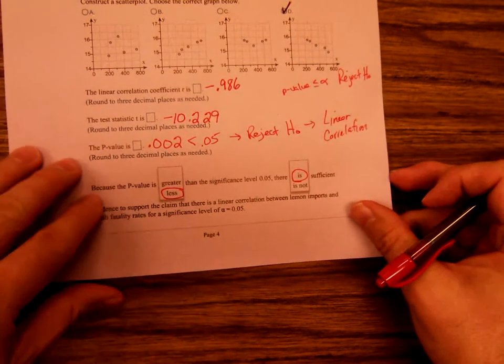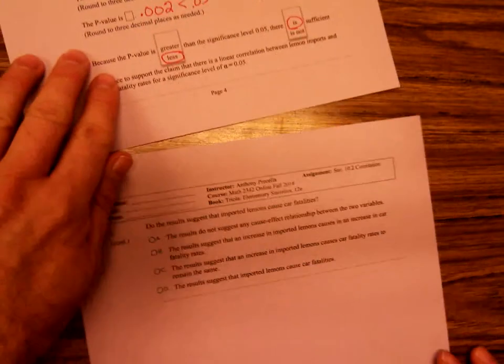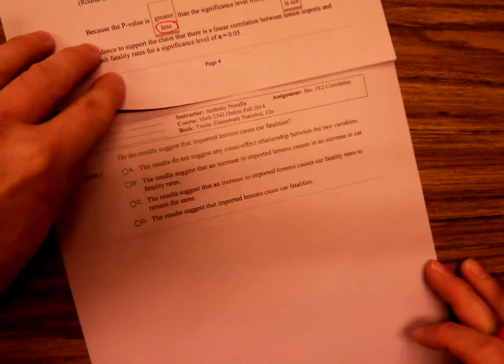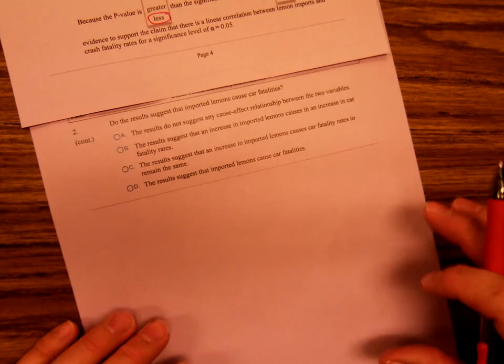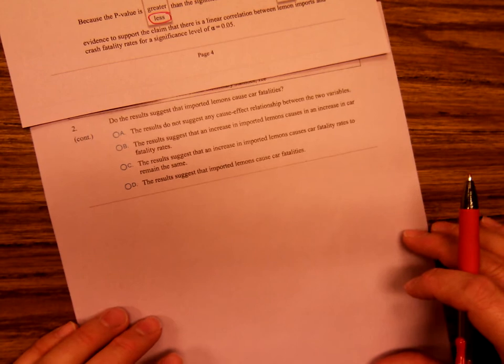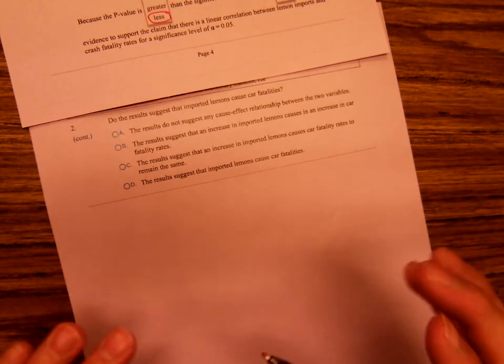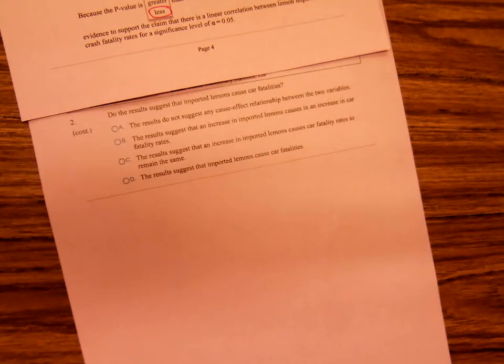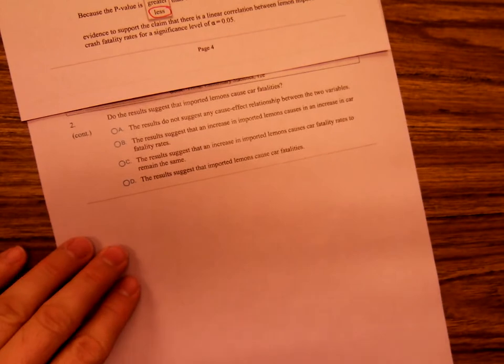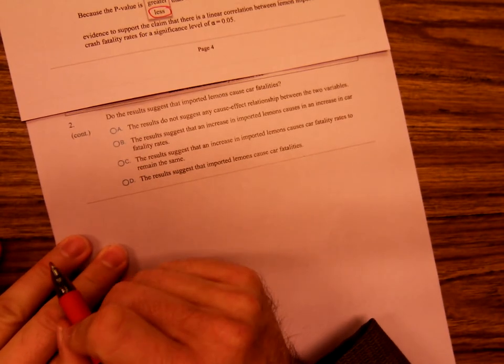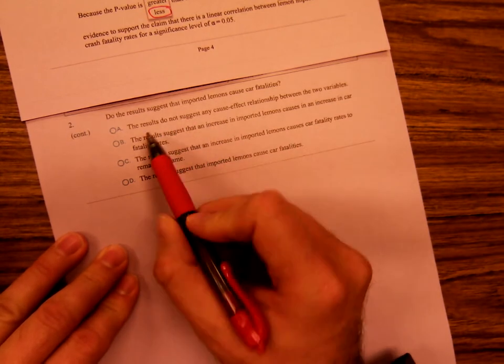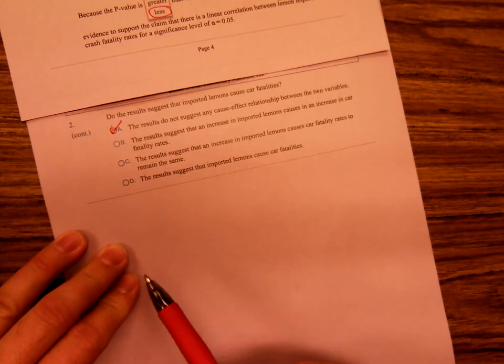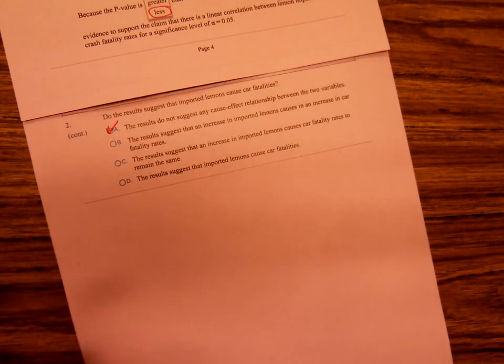Let's see, because the P value is less than the significance level 0.05, there is sufficient evidence to support the claim that there is a linear correlation. Remember if you reject H naught that means that there is evidence of a linear correlation. Now the next page says okay, did the results suggest that imported lemons cause car fatalities? Well no. There's no cause and effect relationship here. Again I'm in this room with this motion sensor, and unless we keep moving around the lights keep cutting off. So do they suggest there's a cause and effect relation? No. There is no cause effect relationship between the two variables.